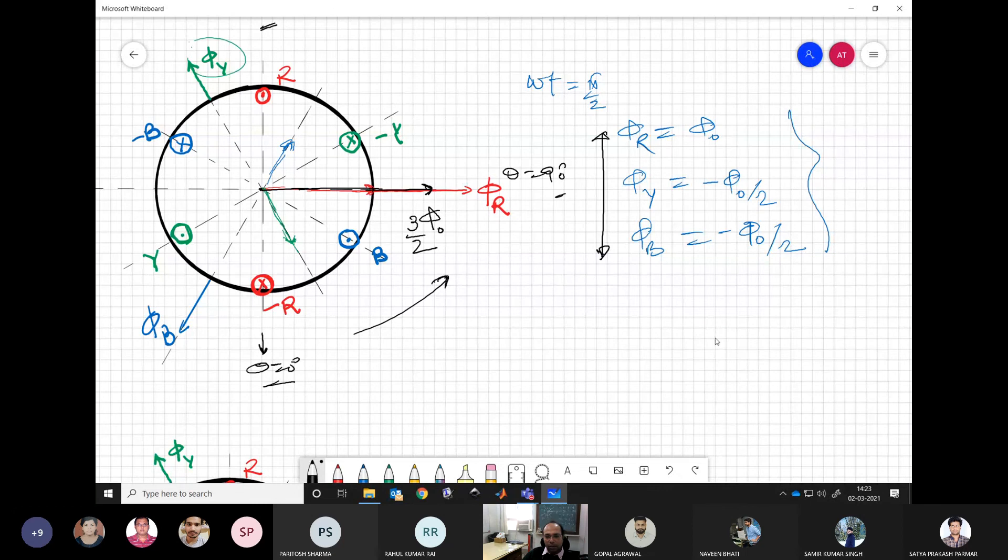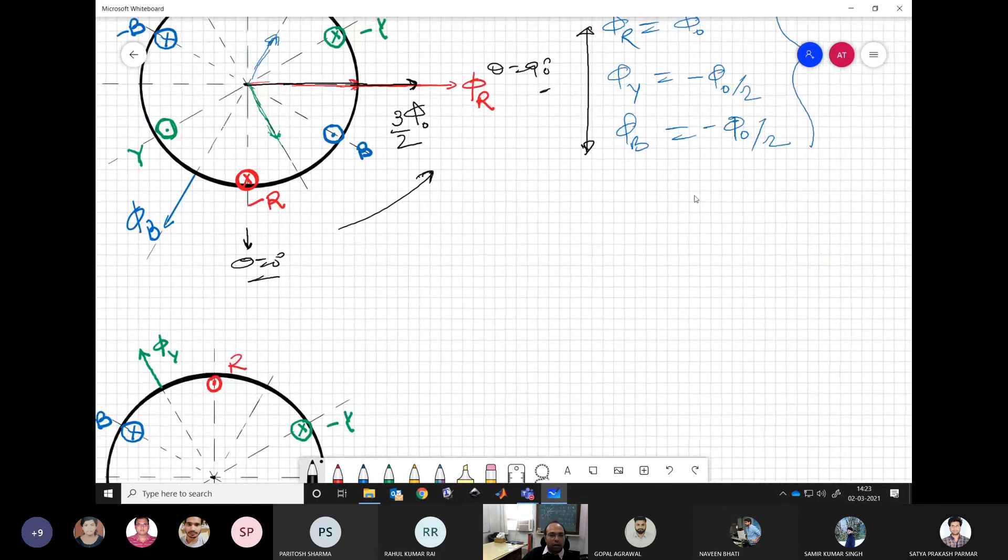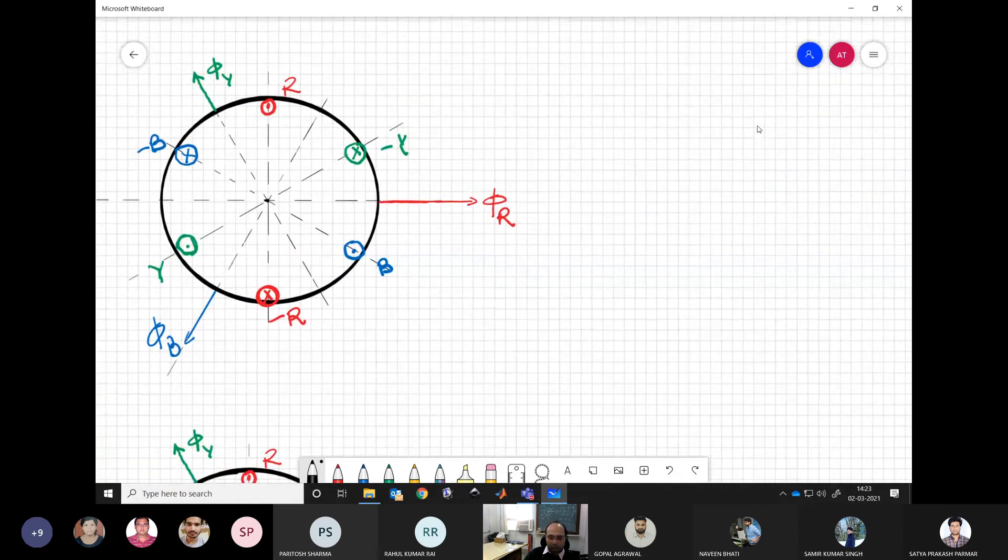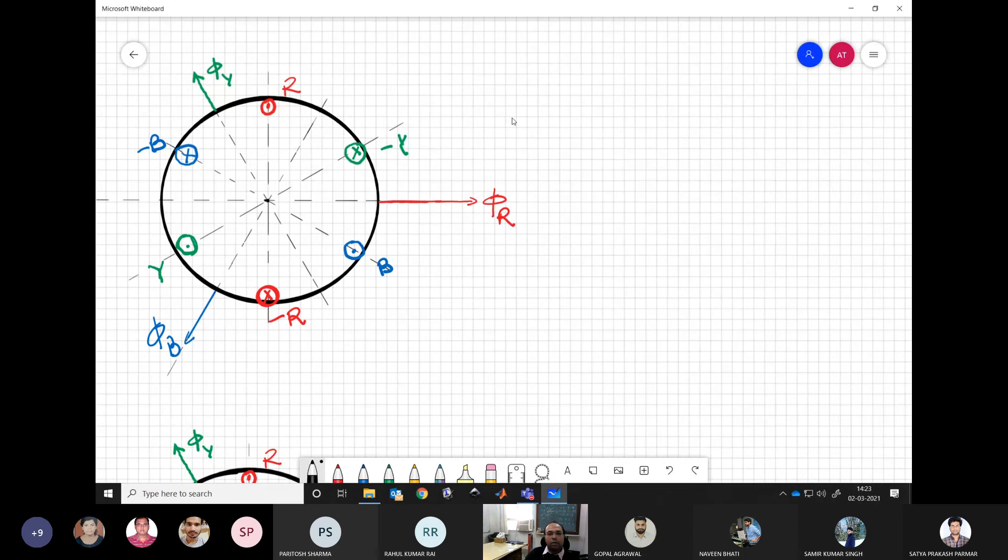So one more instant we can see quickly, and then we can do a couple more exercises on our own. So let's say omega t equal to 2 pi by 3. That time our phi r will be plus phi naught root 3 by 2, and phi y will be 0, phi b will be minus phi naught root 3 by 2.